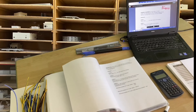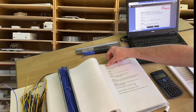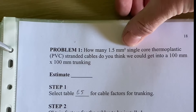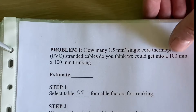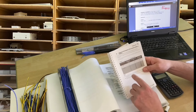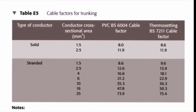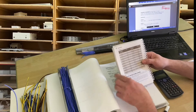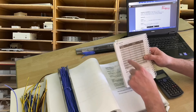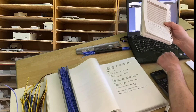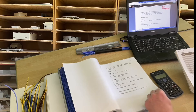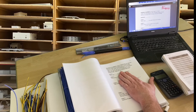The next page is a problem for you to work through yourself. Problem one: how many 1.5mm² single core thermoplastic stranded cables can fit in a 100 by 100mm trunking? You use the same cable factor from E5 — 8.6 — but look up the different trunking factor in E6 for 100 by 100. Problem two involves 4mm² cable in 75 by 75 trunking. Work through those, then we continue to example number two.